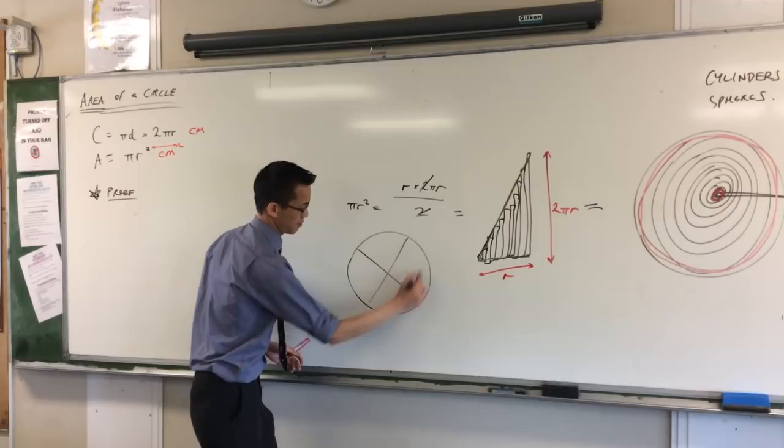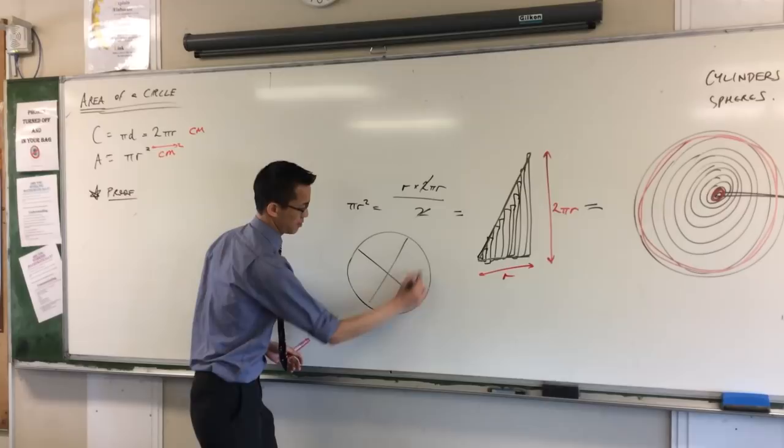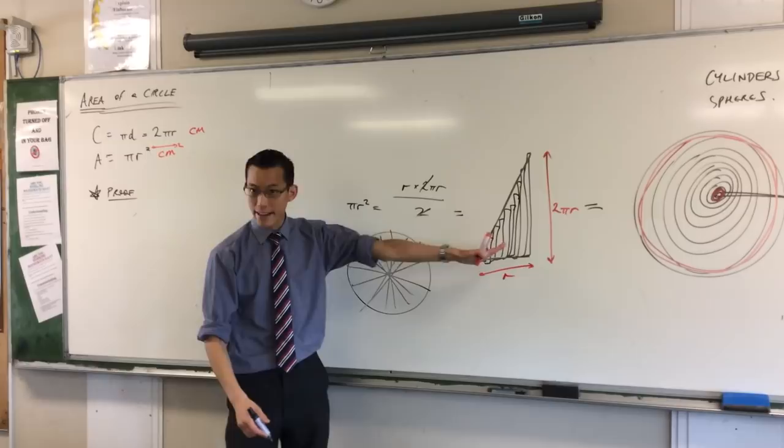Like I said, that's not the only way to slice it up. The alternative is to do it like this. And instead of creating a triangle, if you take all of these pizza slices and you lay them end to end, you'll get a rectangle and you'll get much the same result.